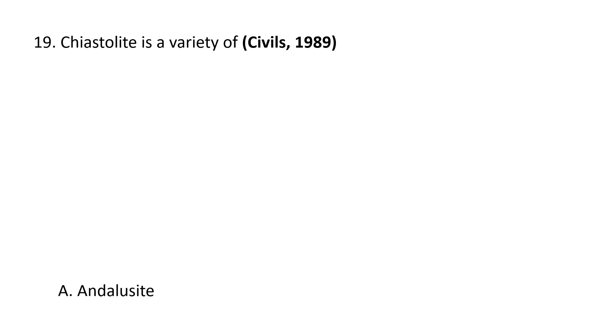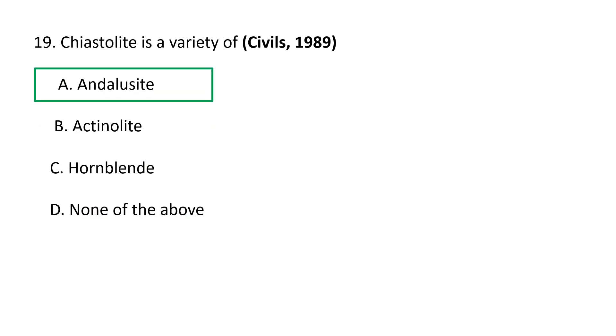Next question. Chiastolite is a variety of: A. Andalusite, B. Actinolite, C. Hornblende, D. None of the above. So chiastolite is a variety of andalusite.